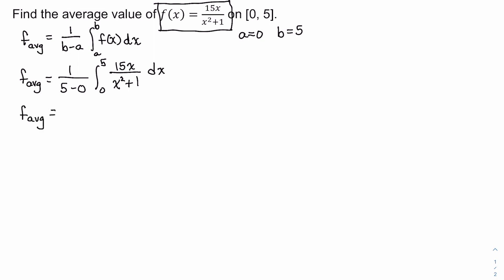We have 1/5 times the definite integral from 0 to 5. I can factor out the 15 from the numerator using the constant multiple rule, writing it out in front of the integral. The denominator x² + 1 becomes (x² + 1)^(−1), and we keep the factor x dx. I rewrite it in this form because it helps identify the u-substitution — u is the expression being acted on by the negative-1 power, which is x² + 1.